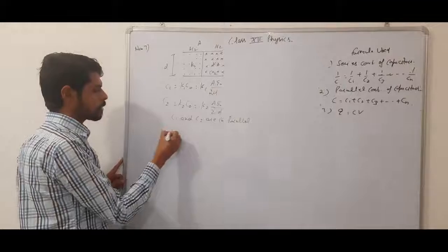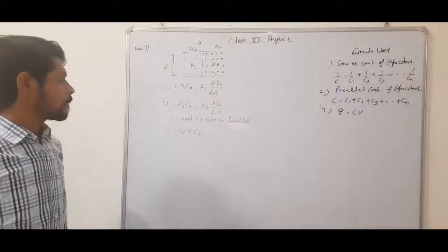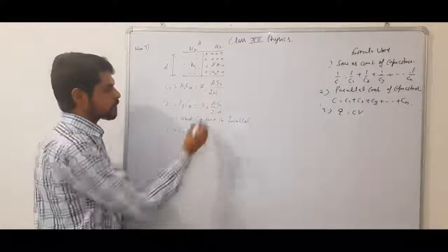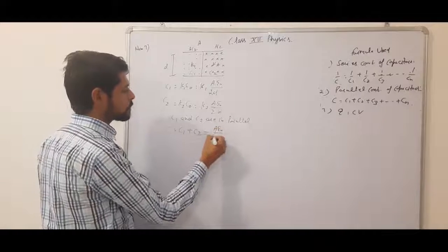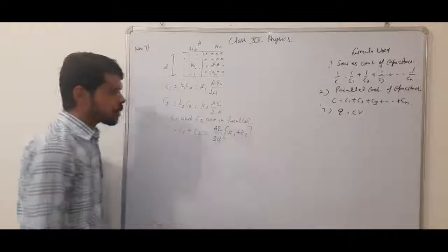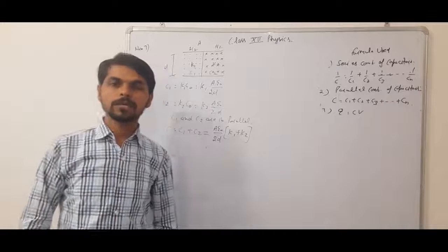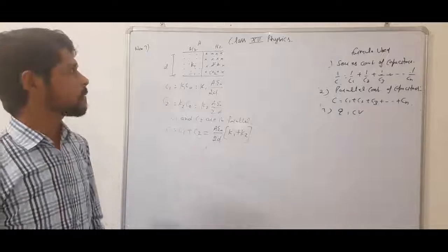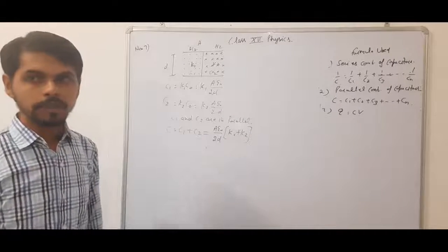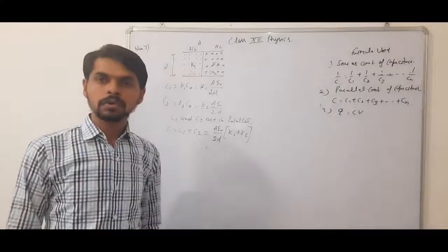For parallel combination, C equals C1 plus C2, which is A epsilon naught by 2D times K1 plus K2. This is the total capacitance when two dielectrics fill the space between the plates of a capacitor when they are separating the area into two equal halves. They are in parallel combination.